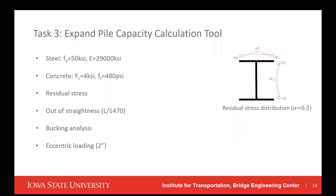For both levels of modeling, we keep the modeling approach the same. For the steel pile, the yield strength is 50 KSI and E is 29,000 KSI. For the concrete encasement, the compressive strength is 4 KSI and tensile strength was 480 KSI. We consider the residual stress of the pile — as shown in the figure, the residual stress distribution has a maximum of about 30% of the steel yield strength. We also consider the out-of-straightness, equal to L over 1,470. For each model, we perform two analyses: first a buckling analysis to determine the mode shape, and then axial loading is applied and increased gradually until the ultimate capacity is reached.